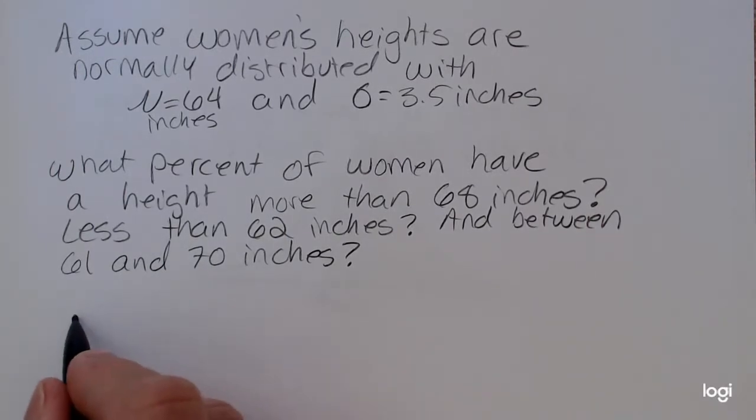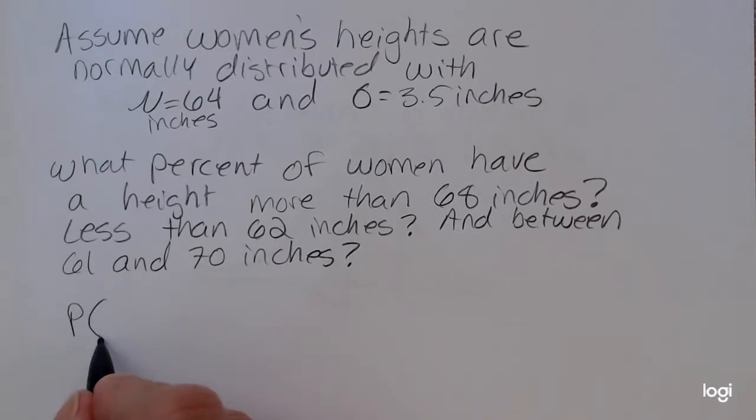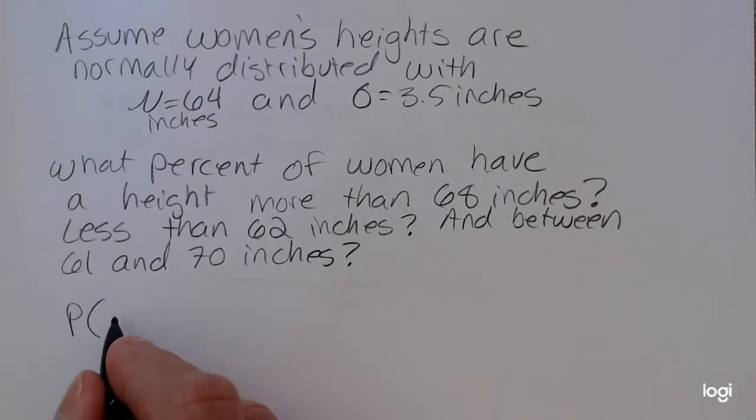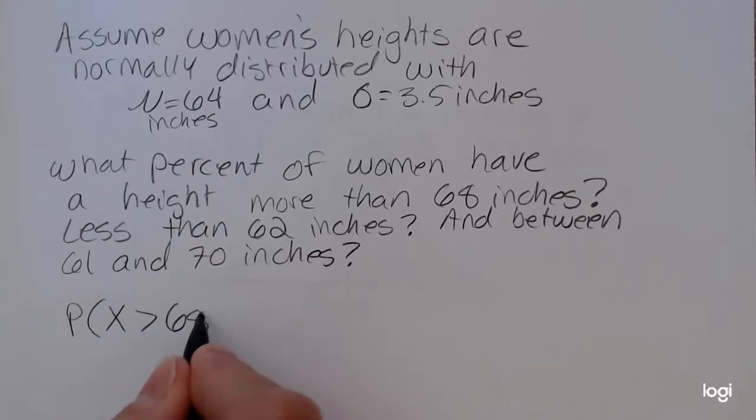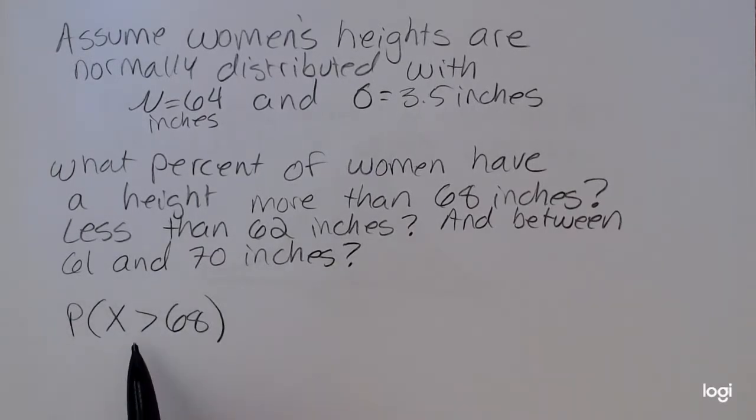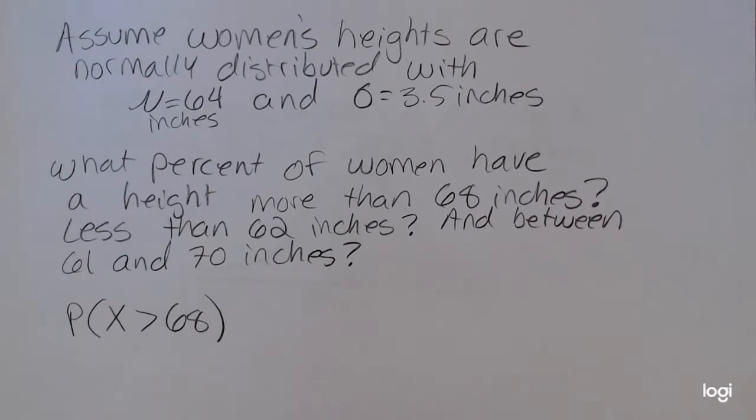That is also the same thing as asking what is the probability of randomly selecting a woman with a height more than 68 inches. So more than will be a greater than case. The normal distribution is a continuous distribution, and the case of equality doesn't matter. So I could have easily included the equality here.